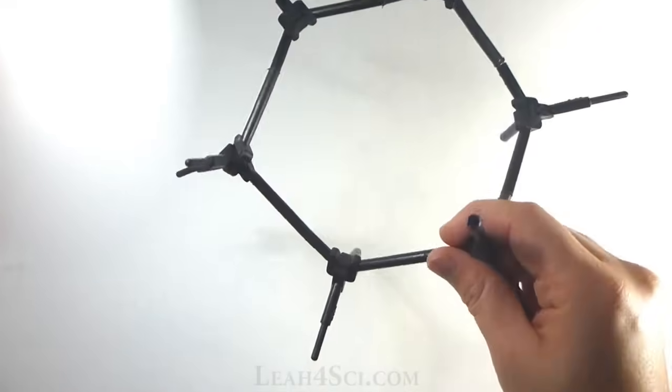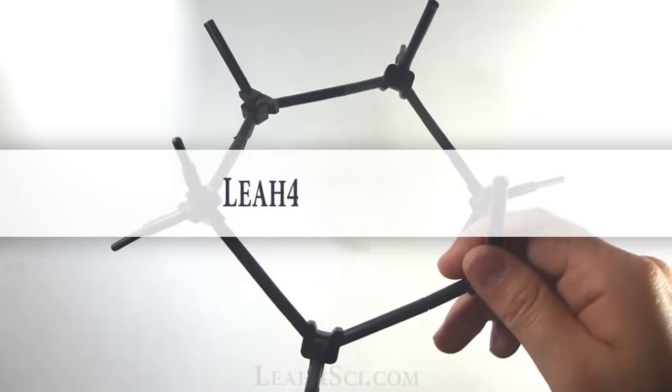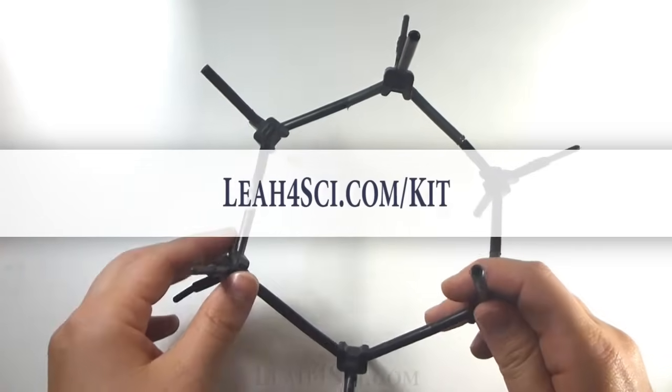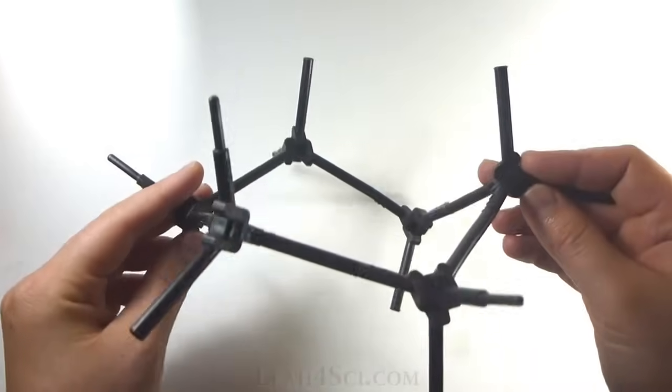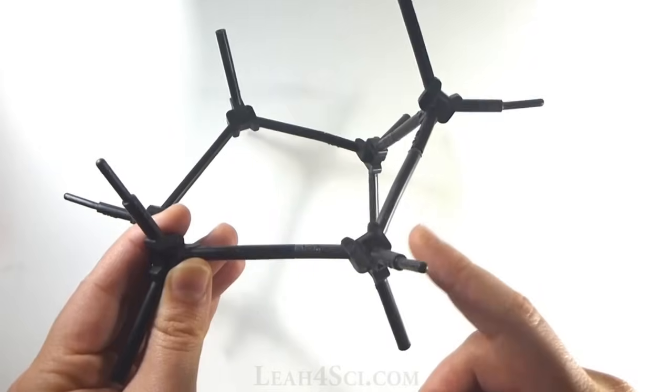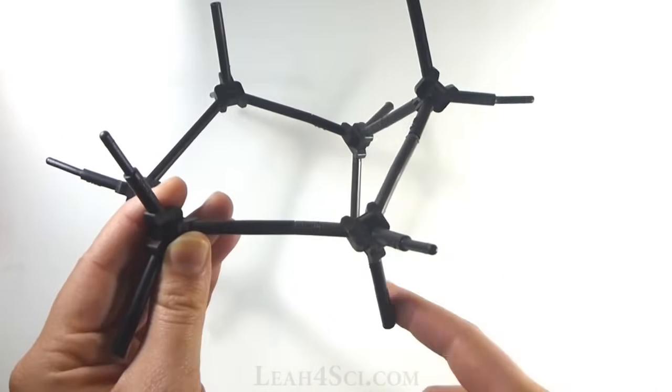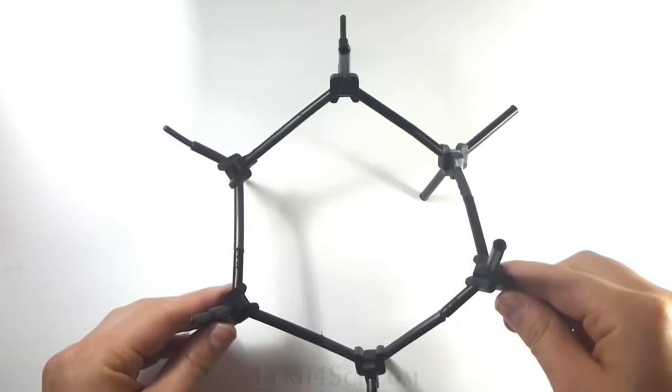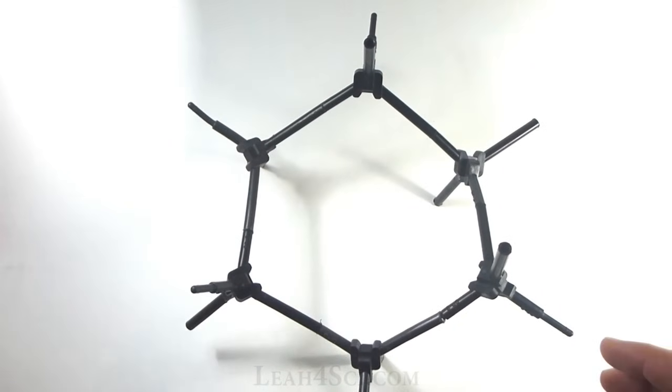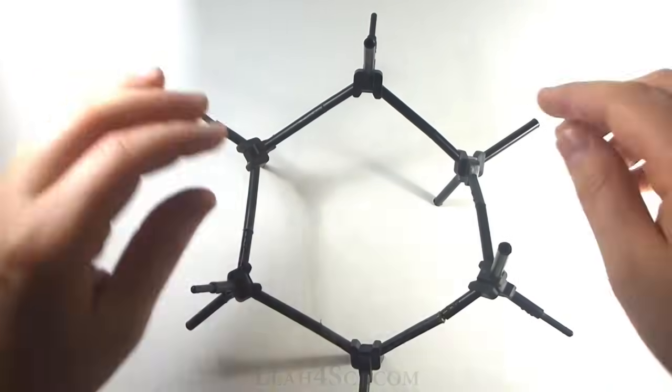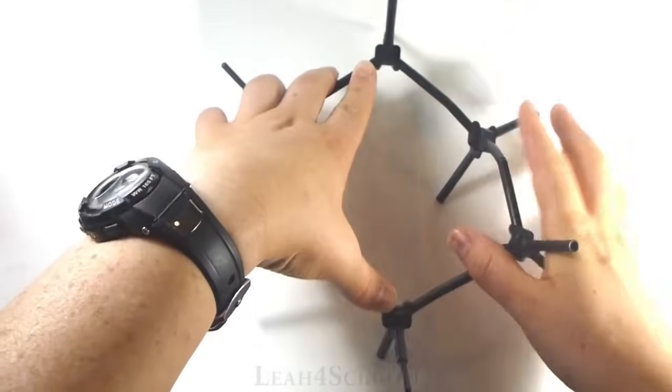Let's take a look at the model kit. You can follow along by getting your own kit at Leah4Sci.com slash kit. Here we have a cyclohexane where each of these represents a carbon atom with four bonds. So we have two going to the ring and two hydrogen atoms. If we look at the top down view, it kinda looks like a hexagon but take a look what happens when I try to flatten it out.